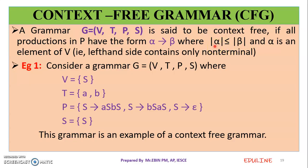Alpha must be an element of V — that is, alpha must be a non-terminal. For the set of non-terminals we use capital letters, and for terminals we use small letters. So the left side of a production rule is a non-terminal, represented by a capital letter.